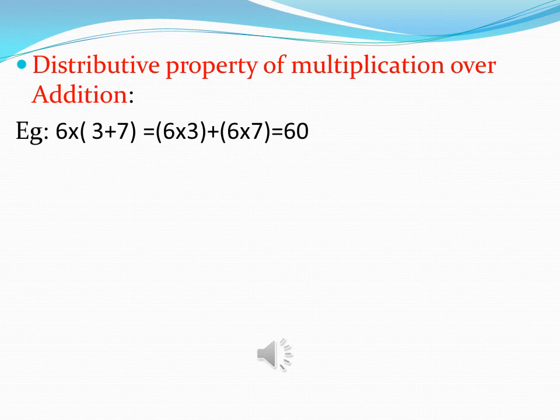Property number 3, distributive property of multiplication over addition. Let us understand it with an example. 6 multiplied by 3 plus 7 is equal to 6 multiplied by 3 plus 6 multiplied by 7, which is equal to 60. That means if we multiply 6 by the sum of 7 and 3, or if we multiply 6 separately with 3 and separately with 7 and after addition, the answer will remain the same.